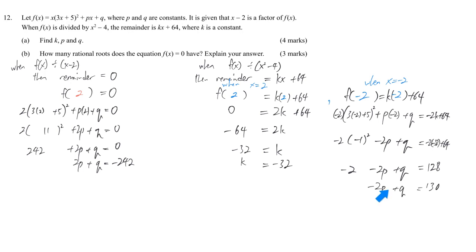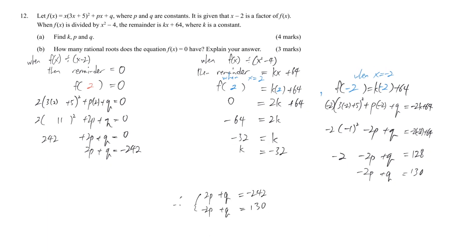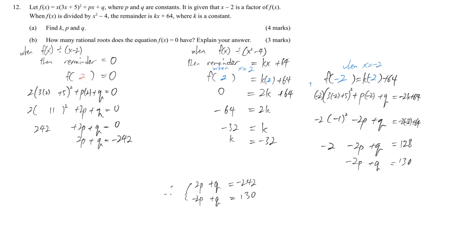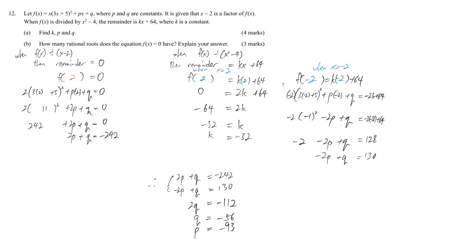In order to get p and q, we solve the simultaneous equation. I simply add two equations together. We have 2q while p is eliminated. 2q is negative 1, 1, 2, and q equals negative 56. And p equals negative 93. So we have all the values: p equals negative 93, q equals negative 56, and k equals negative 32.